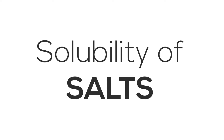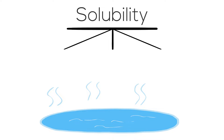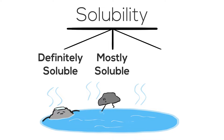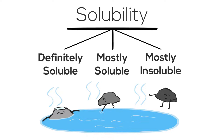Hey guys, Saraf here, back for more Chemistry Explanation. Today, we'll be talking about easy ways to determine which salts are soluble and which salts are not. Salts are categorized into three groups of solubility: definitely soluble, mostly soluble, and mostly insoluble. But before we go into explaining each of the different categories, let's briefly touch on what is a salt.